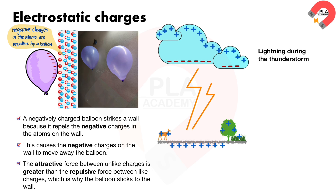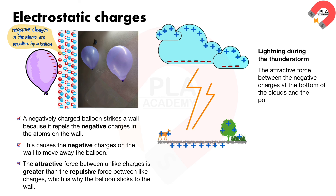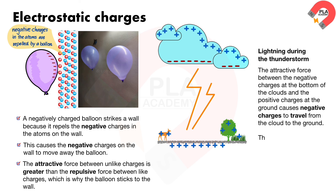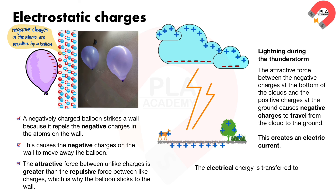The attractive force between the bottom of the clouds and the positive charges at the ground causes negative charges to travel from the cloud to the ground. This creates an electric current. The electrical energy is transferred to light, heat, and sound energy — this is lightning.